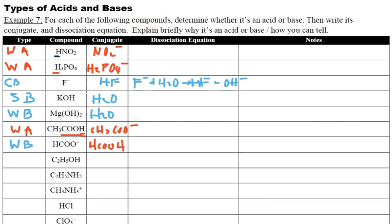C2H5OH. When you see that, that is an alcohol. So it's not an acid or a base. That's going to be a neutral. And it would not have a conjugate.